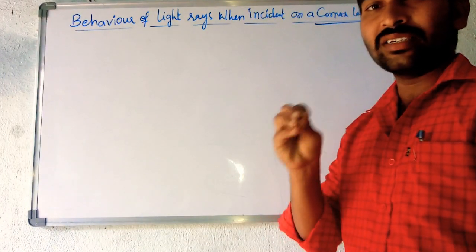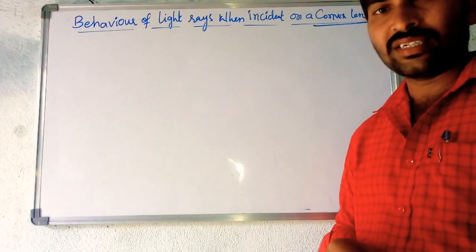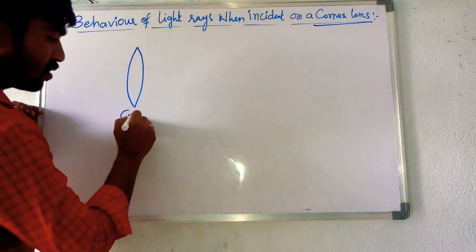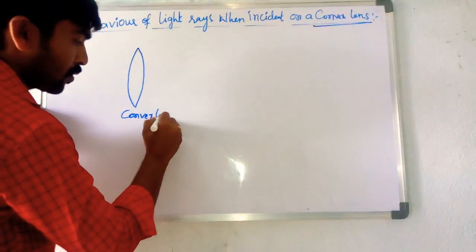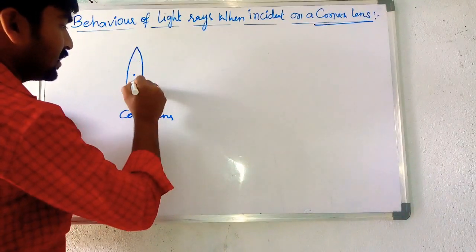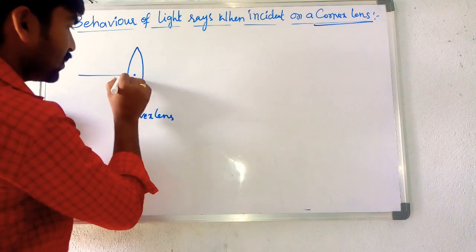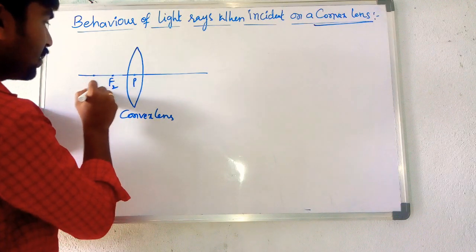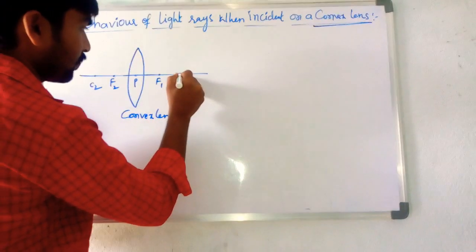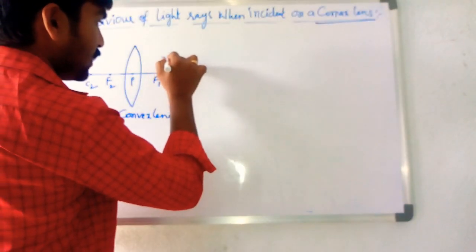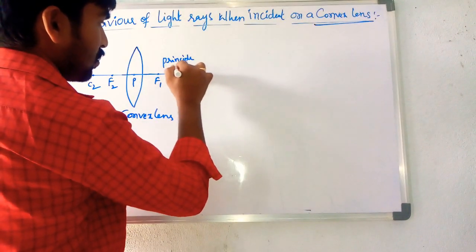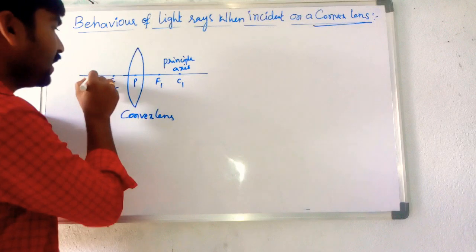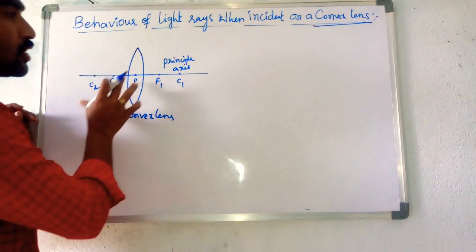What is the behavior of incident rays when it strikes on a convex lens? First, the convex lens diagram. This is the convex lens and the midpoint of the lens is called the optic center. The line joining the center of curvatures and the optic center is called the principal axis.